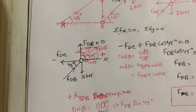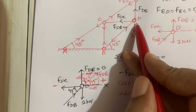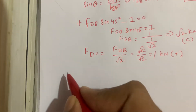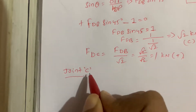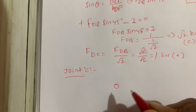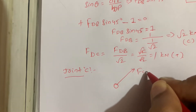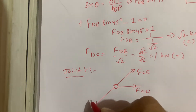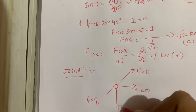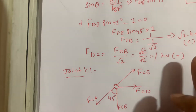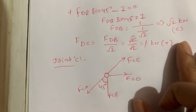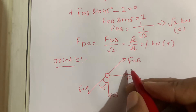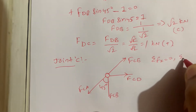Joint D is now complete. Next we take joint C. For joint C the free body diagram shows force FCE, another force FCD, another force FCA, and FCB at 45 degrees. By using equilibrium equations sigma Fx equal to zero and sigma Fy equal to zero, we are going to calculate the forces.